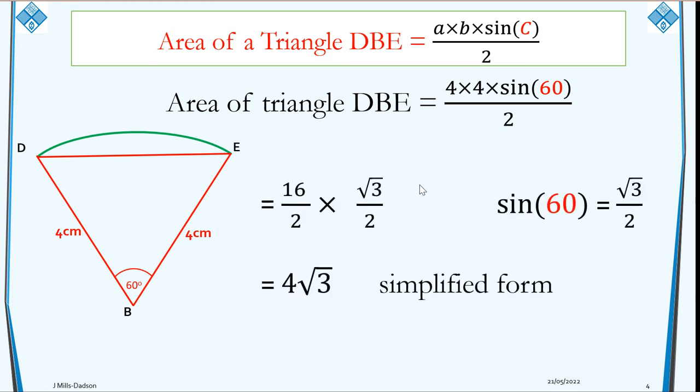So when you work this out, 4 times 4 is 16, 16/2 times sin 60. Sin 60 is given to us as √3/2. You need to remember your exact sine trigonometry values. So sin 60 is √3/2. When you work this out, you simplify it as 4√3. So the triangle is 4√3.